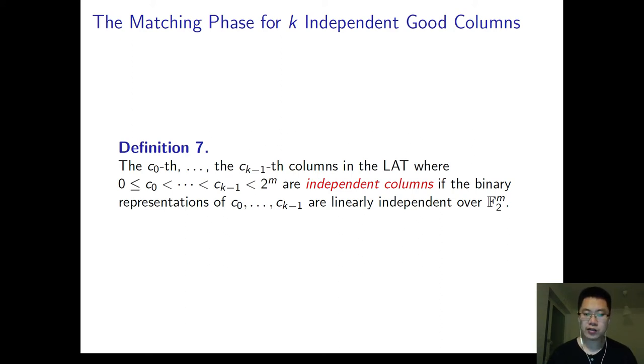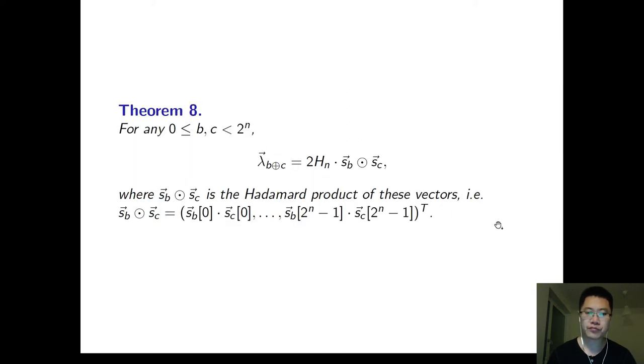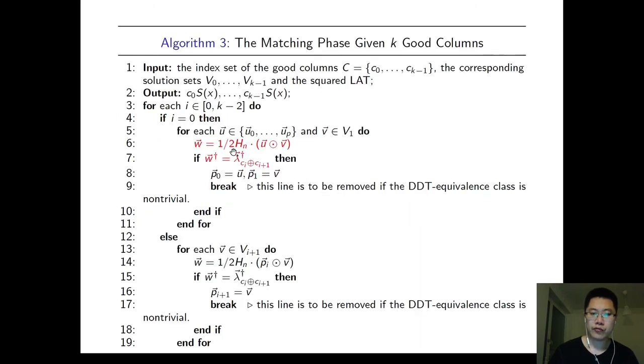We define the independent columns here where we have k-columns and the binary representations of the indices are linearly independent over the field. We use this formula to find the matching boolean function. We try all the possibilities and compute the vector and check the consistency.